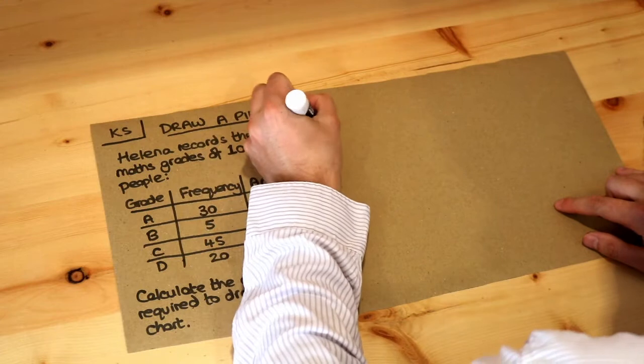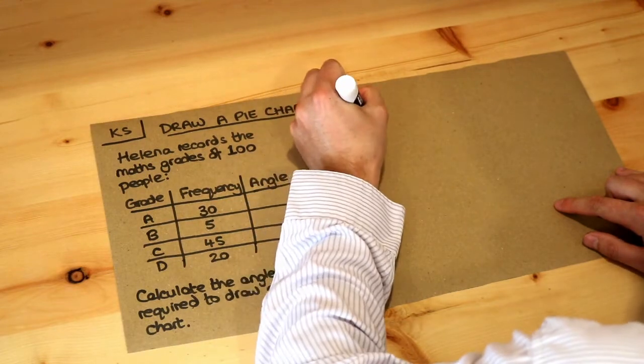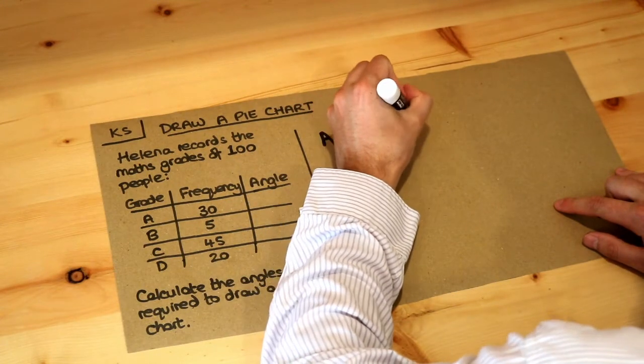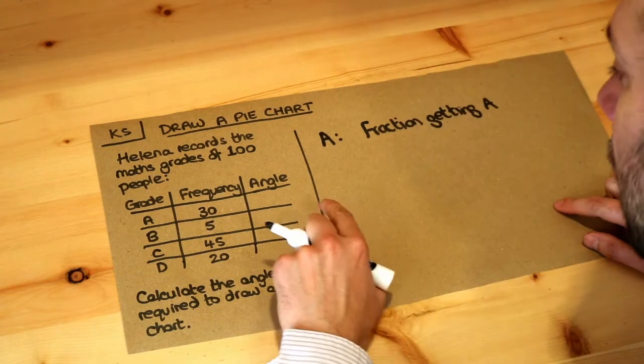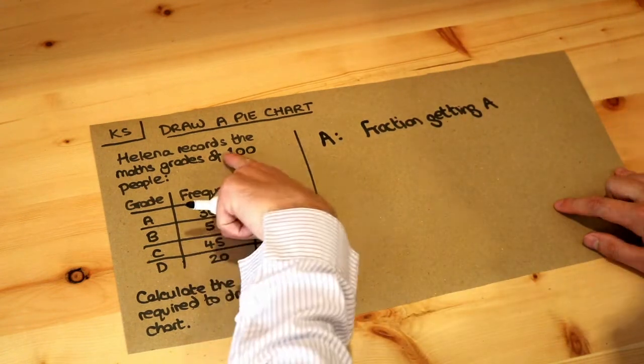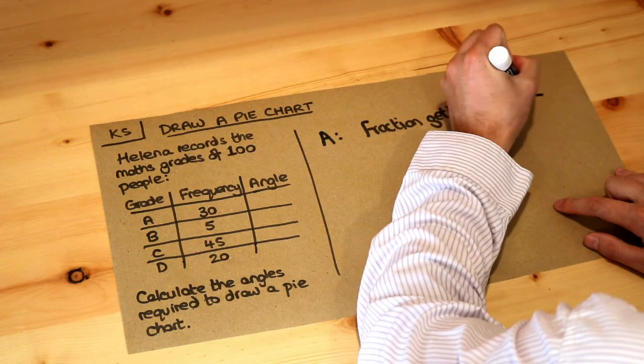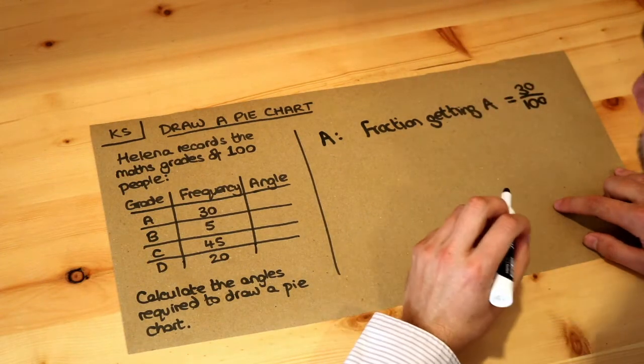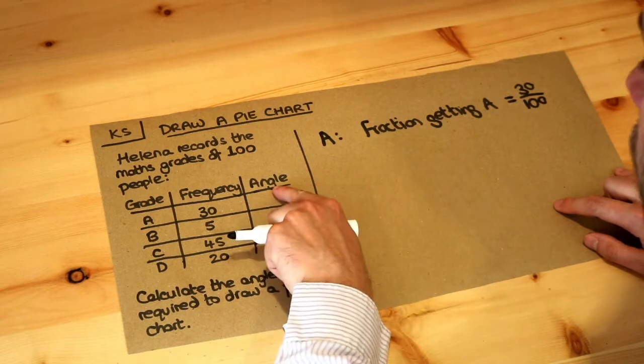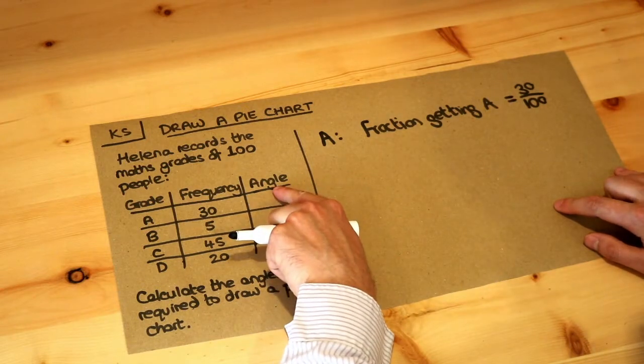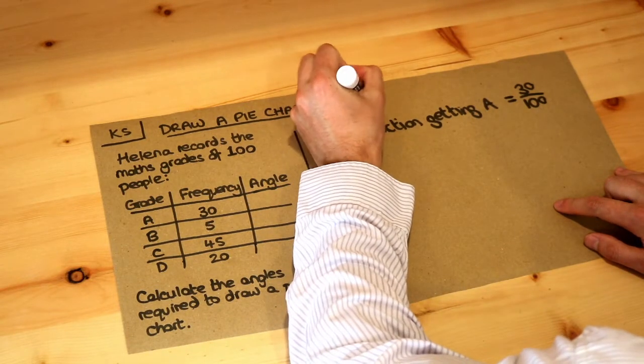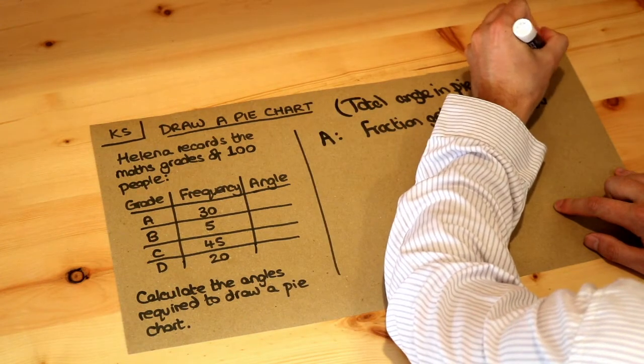So if we just do grade A, what fraction of people got a grade A? Well the fraction of people getting grade A was 30 people out of 100 people, so it's 30 out of 100 which is 3 tenths. And we know the total angle of a pie chart is 360 degrees.